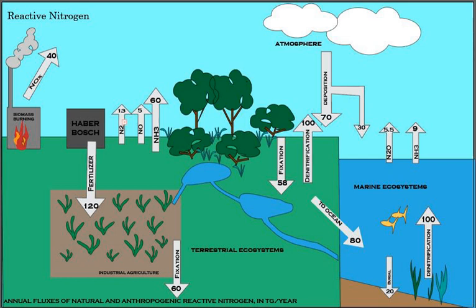Ammonification: When a plant or animal dies or an animal expels waste, the initial form of nitrogen is organic. Bacteria or fungi convert the organic nitrogen within the remains back into ammonium (NH4+), a process called ammonification or mineralization. Enzymes involved are GS (glutamine synthetase), GOGAT (glutamate-2-oxoglutarate aminotransferase), and GDH (glutamate dehydrogenase), which plays a minor role in ammonium assimilation but is important in amino acid catabolism.